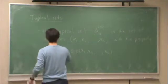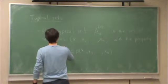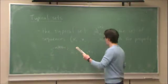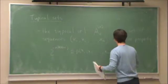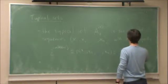2 to the minus N times h of X plus epsilon, and 2 to the minus N times h of X minus epsilon.